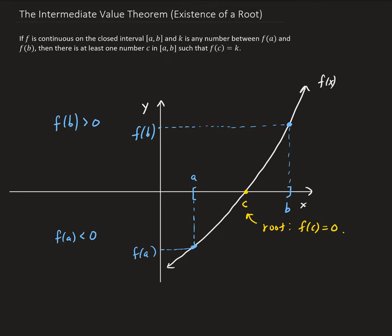This theorem doesn't tell you how many roots there are — it just tells you at least there's one. Because maybe our function does something like this: maybe it goes up, comes back down, and then goes up again — in that case there would be three roots. Or maybe the function goes like this and then back up — in that case we have one root. So this theorem doesn't tell you how many roots; it basically just tells you there is at least one root that we know, one value — in this case the root — that is in between a and b.